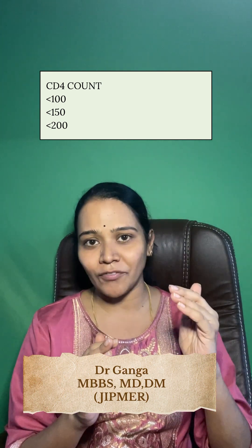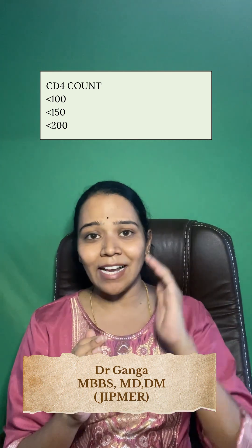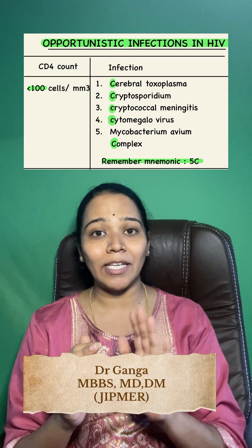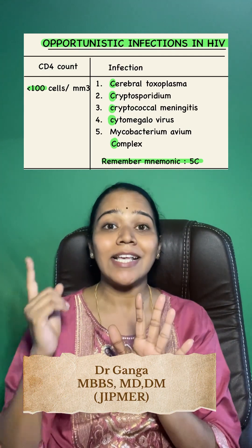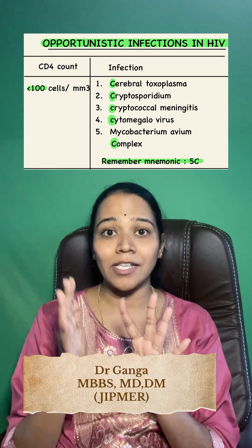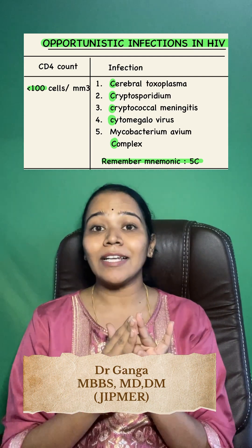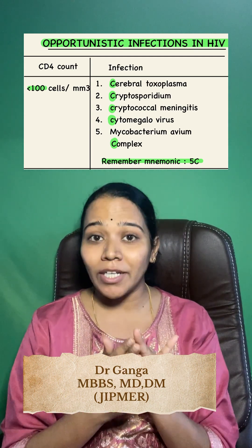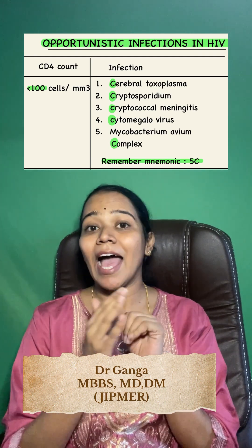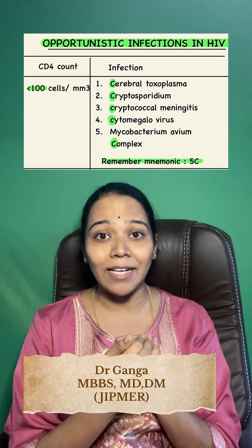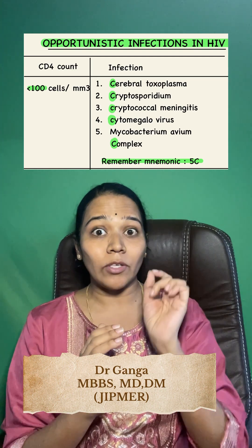For CD4 less than 100, remember the mnemonic: the 5 C's. These are Cerebral toxoplasmosis, Cryptococcal meningitis, Cryptosporidiosis, Cytomegalovirus, and the fifth C is a Complex — Mycobacterium avium complex (MAC).